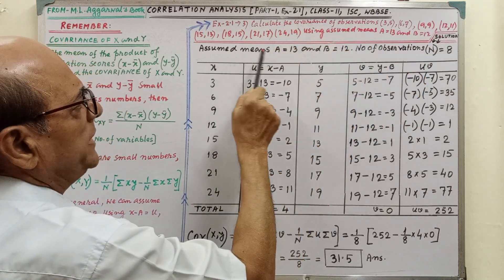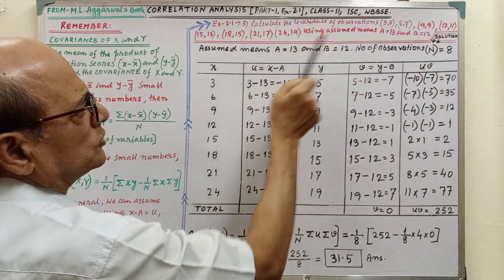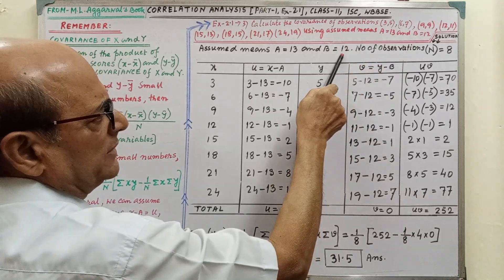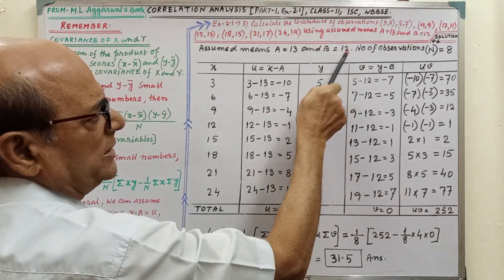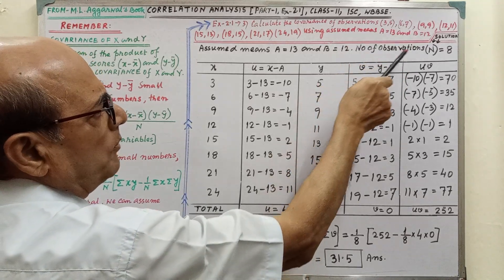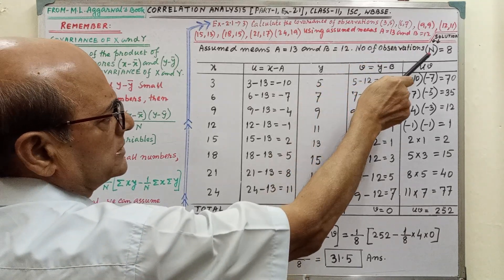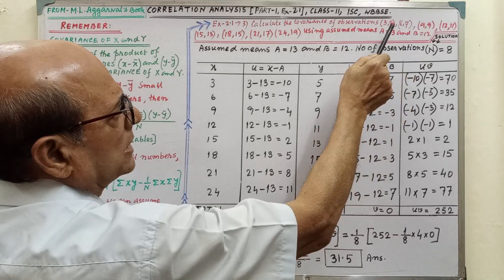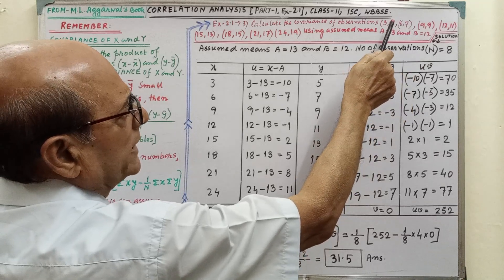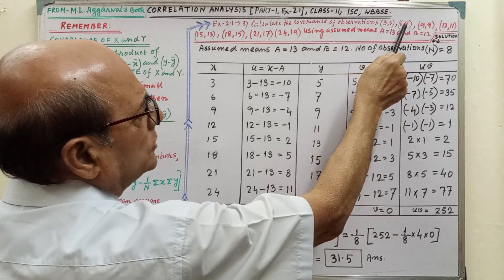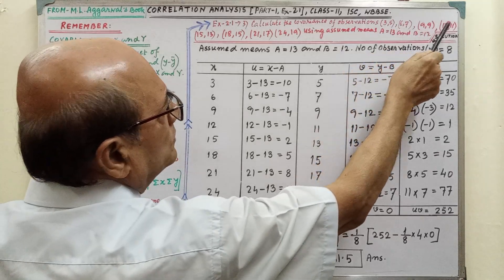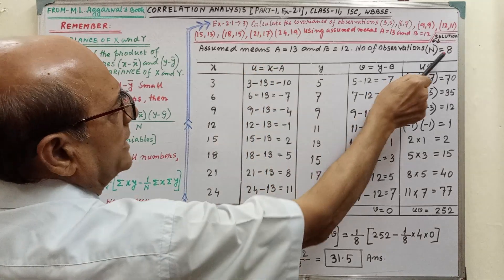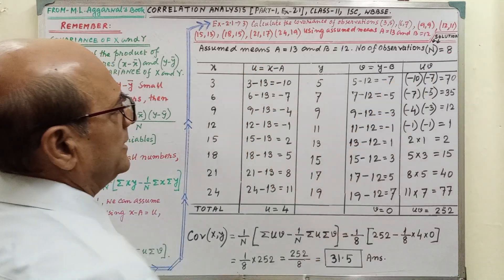Assume means A equal to 13 and B equal to 12 — that is given in our question. Number of observations, that is capital N. By counting we get 1, 2, 3, 4, 5, 6, 7, 8. That is N equal to 8.